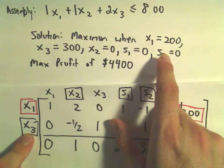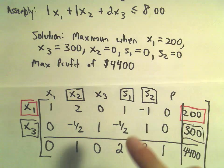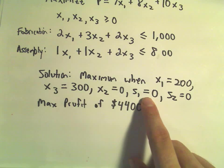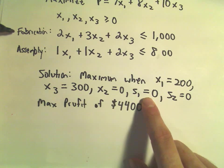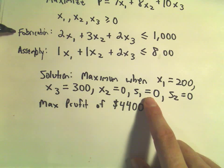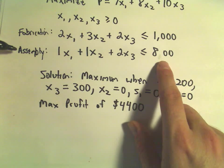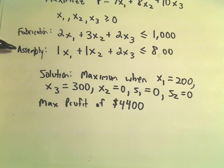Likewise, s₁ and s₂ equal zero. What this means is you have zero hours of slack time when it comes to fabrication. That's where we had introduced s₁. You have zero hours of slack time when it comes to the amount of hours you had for assembling things.